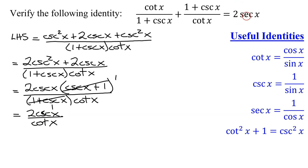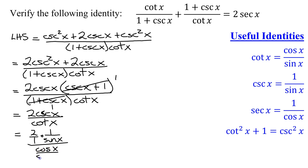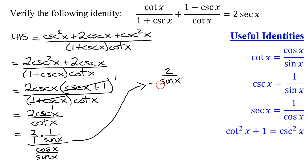We're trying to prove this equals 2 times the secant of x, so at this point I'll write everything in terms of sines and cosines. The numerator becomes 2 over 1 times cosecant of x, which is 1 over sine of x, giving 2 over sine of x. The denominator is cotangent of x, which is cosine of x divided by sine of x. Multiplying across, I get 2 over sine of x, all divided by cosine of x over sine of x.